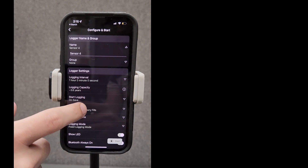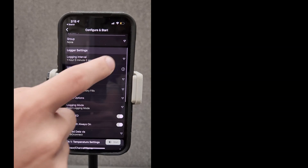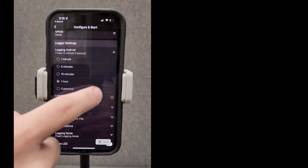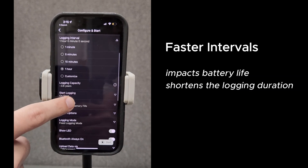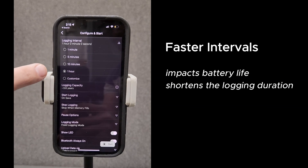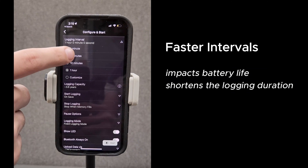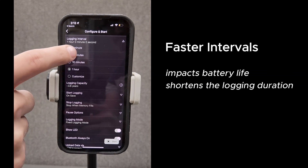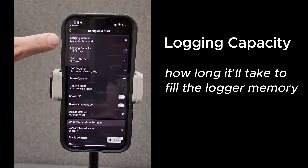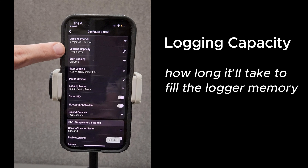Next, you can set the logging interval, which determines how often the logger takes measurements. Keep in mind, a faster interval impacts battery life and shortens the logging duration. The logging capacity indicates how long it'll take to fill the logger memory, based on the logging interval and other factors.